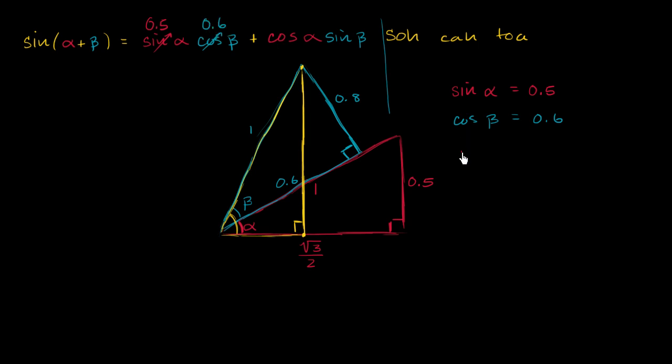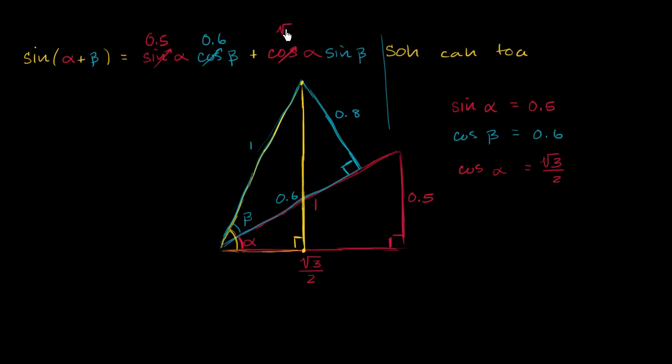Cosine of alpha. Adjacent over hypotenuse. It's square root of 3 over 2 over 1. So that's just square root of 3 over 2. And then finally, sine of beta.